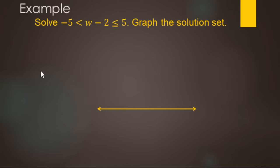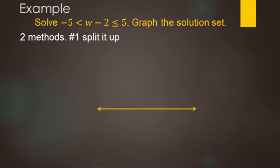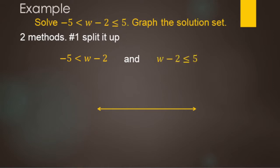For this example, we're going to solve negative 5 is strictly less than W minus 2 is less than or equal to 5, then graph it. There are a couple of different ways of doing this. Way number 1 is to split it up. You take the left portion — negative 5 is less than W minus 2 — and work that one, then do the right-hand portion — W minus 2 is less than or equal to 5. You split them up, work each one separately, and then compile your results.